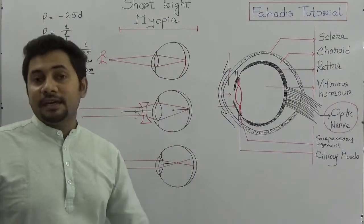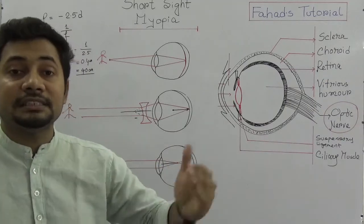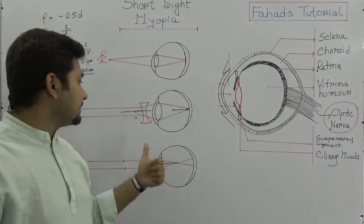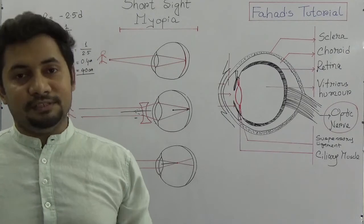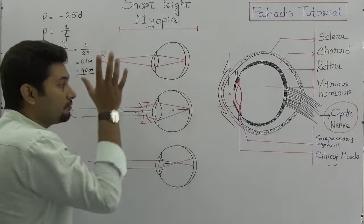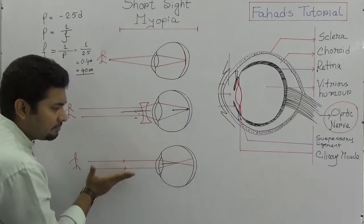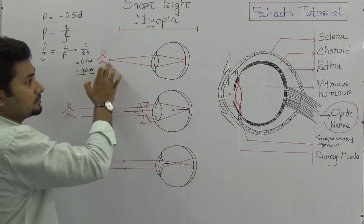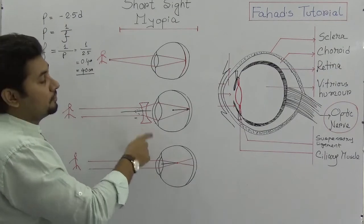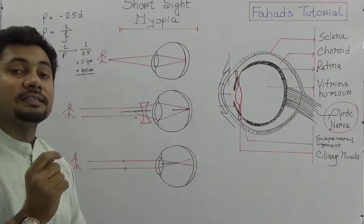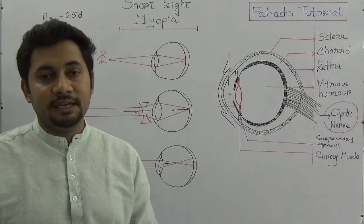When a person has myopia or short sight, they can see near objects but cannot see far objects clearly. The remedy is to use a concave lens, and the power of that concave lens will be negative, confirming it is a concave lens. I hope you understand. Try to draw these figures accurately. The next video will cover hypermetropia or long sight — take care, stay well, bye.